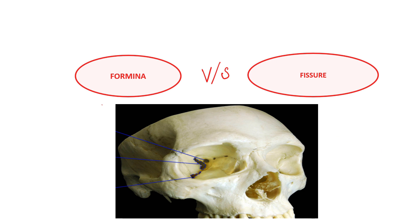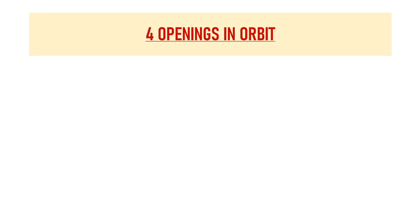Before we start, just a basic difference between foramina and fissures. A foramina is a circular opening in the orbit, whereas a fissure refers to an opening which is slightly elongated — for example, the superior orbital fissure and the inferior orbital fissure.